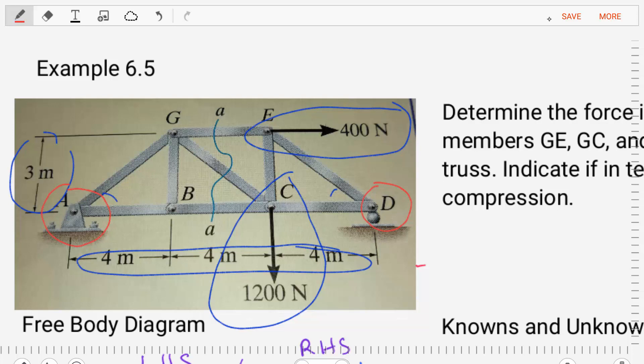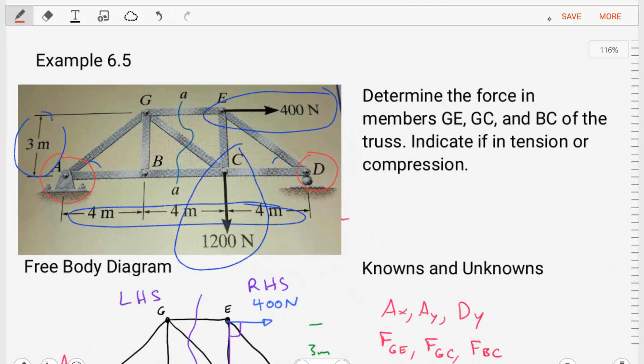So based on that, we can replace those supports with the reactions. We can kind of get an idea of some unknowns that we have: AX, AY, and DY in that truss.